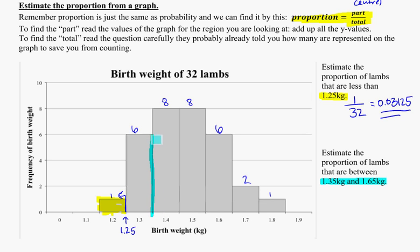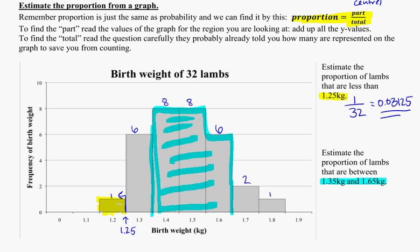and then the other number I've got is the 1.65, so that's going to be halfway between 1.6 and 1.7. So I'm basically looking for the number of lambs that are between those two values, which is all this stuff in there. And if I add that up, 8 plus 8 gets me to 16, plus another 6 gets me to 22.